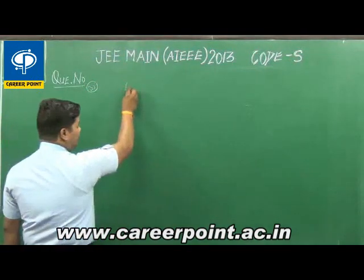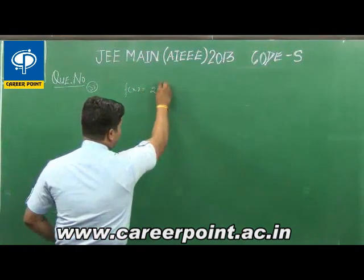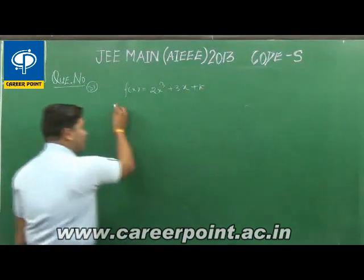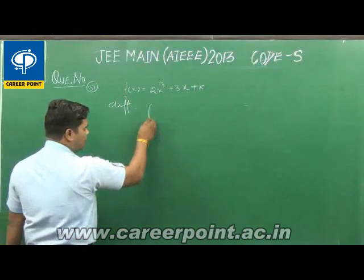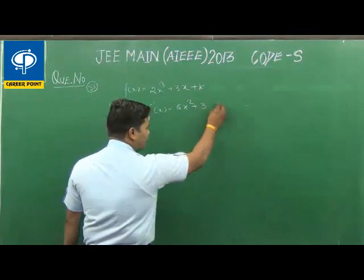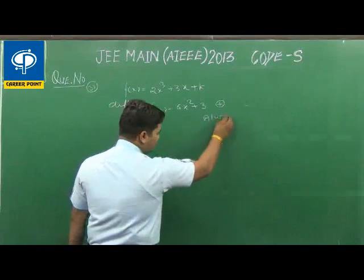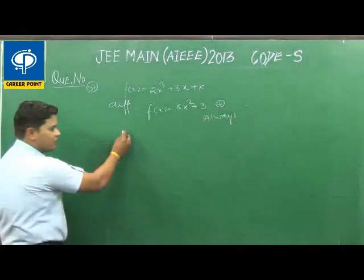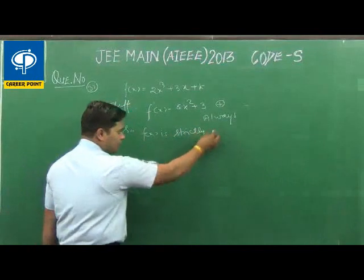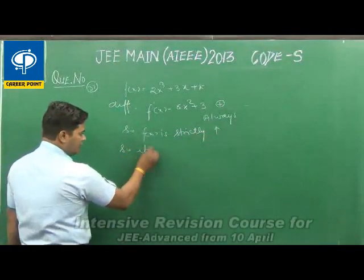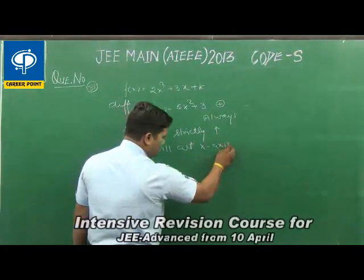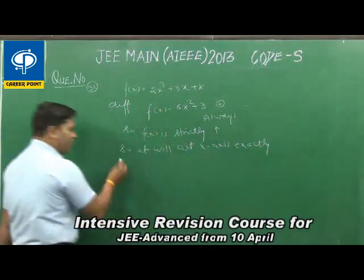We have to differentiate this function. f(x) is 2x³ plus 3x plus k. Differentiating, f'(x) is equal to 6x² plus 3, which is always positive. So the function f(x) is strictly increasing, meaning it will cut the x-axis at exactly one point.